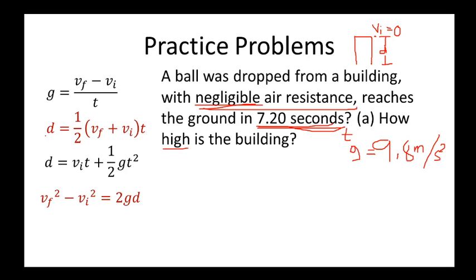Which formula contains the distance variable? Equations 2, 3, and 4 — so we eliminate equation 1. Next, which formula has acceleration? We have a g value, so we eliminate the formula without acceleration. Then we check which formulas have initial velocity and time variables. Since we have a time value, we select the formula that includes time — eliminating the one that does not.